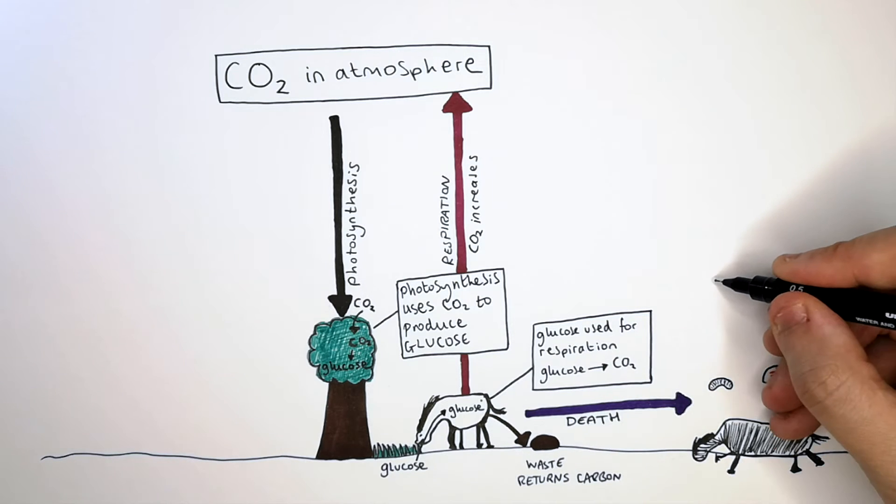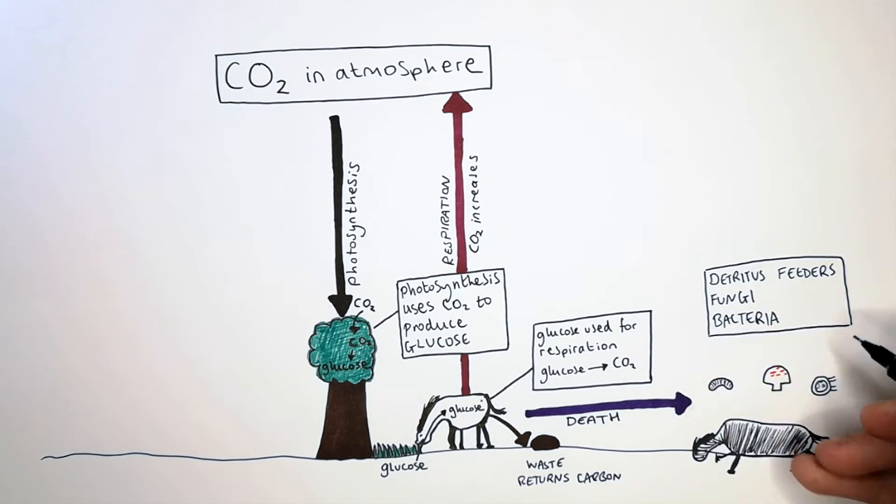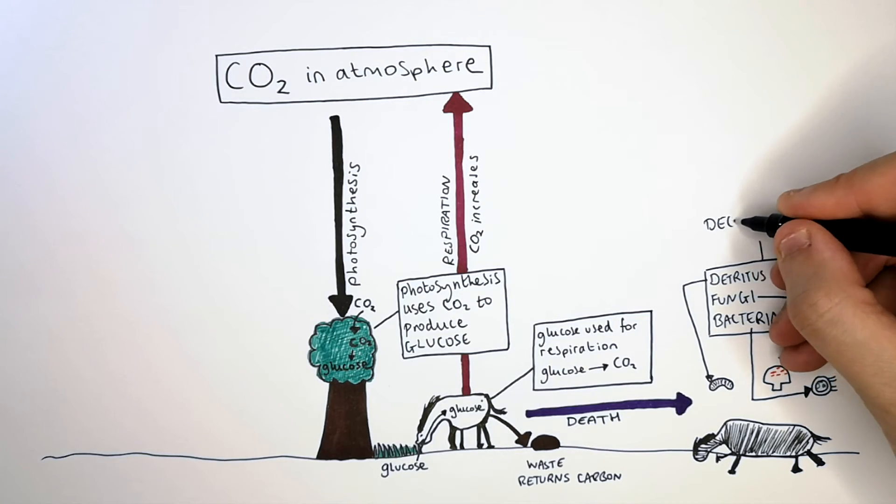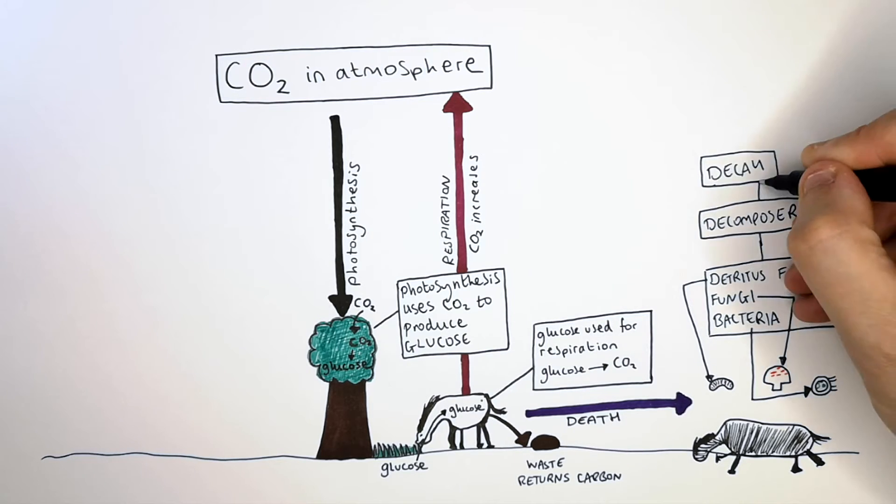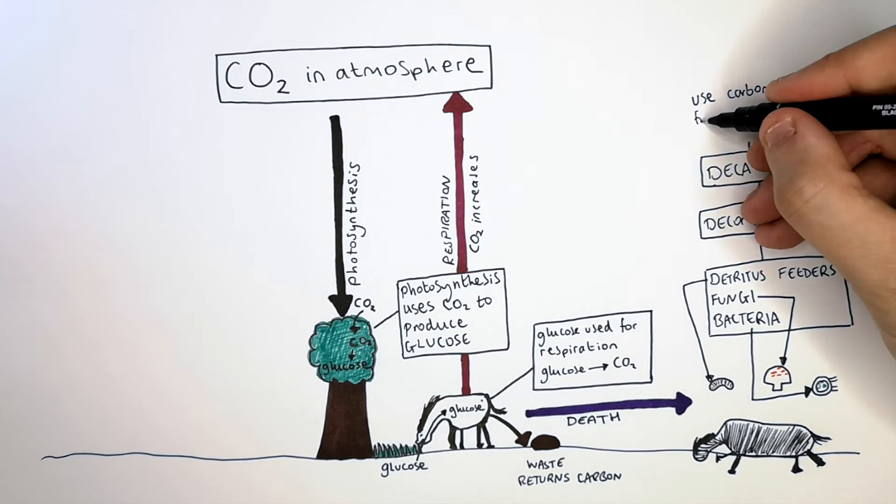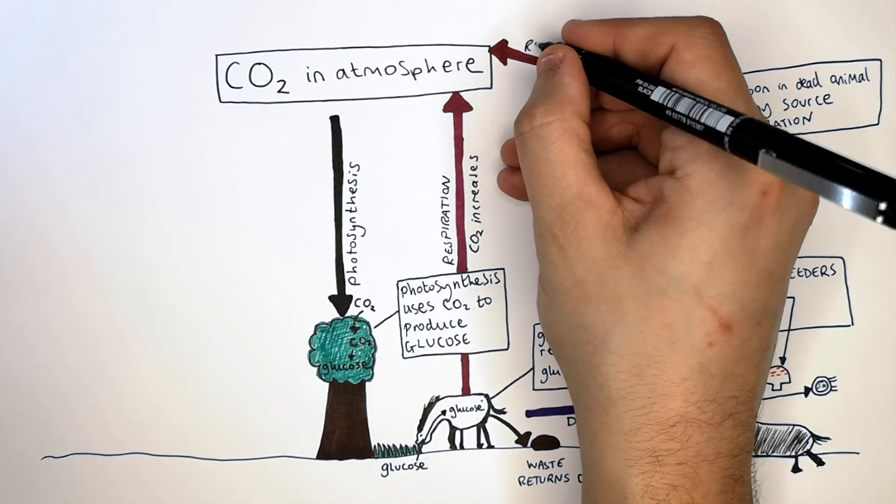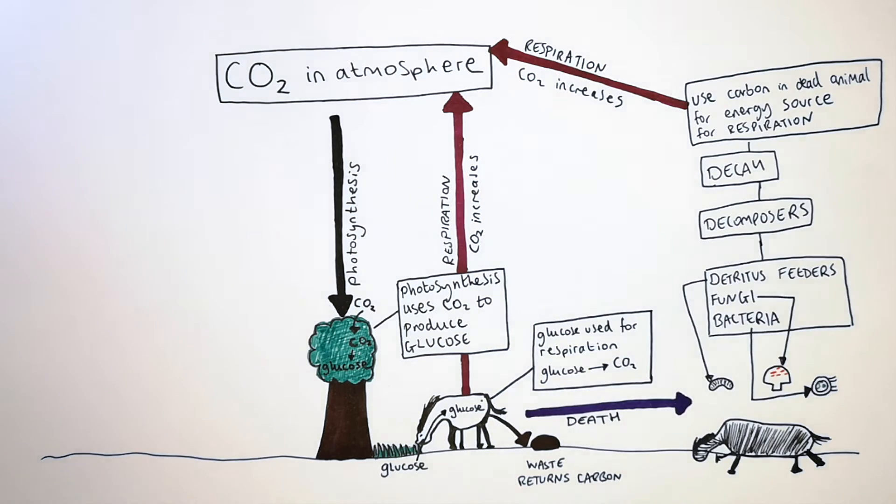The organisms that decay dead material are detritus feeders, fungi and bacteria. The detritus feeders, fungi and bacteria are known as decomposers. These decomposers decay dead organisms, whereby the decomposers use carbon in the dead animal as an energy source for respiration. They convert the carbon-based molecules in the dead animal into CO2. Remember, respiration by detritus feeders, fungi and bacteria increase CO2 in the atmosphere.